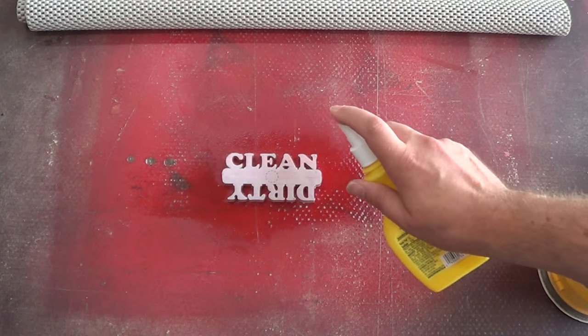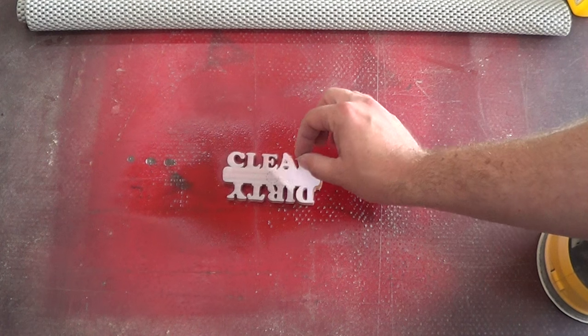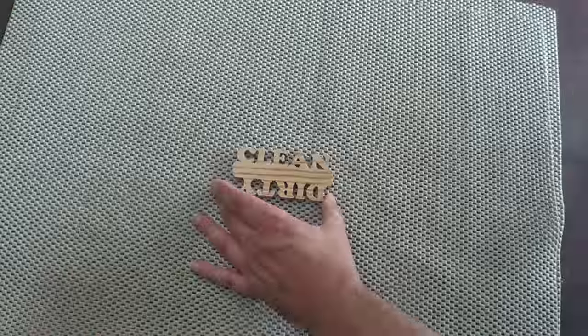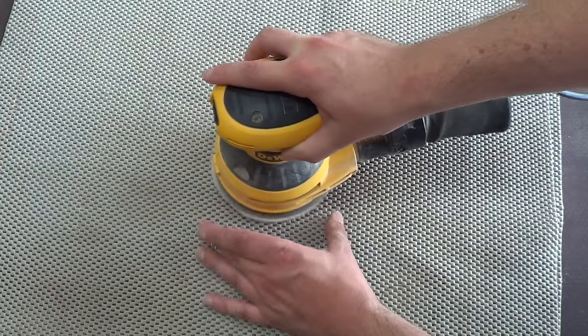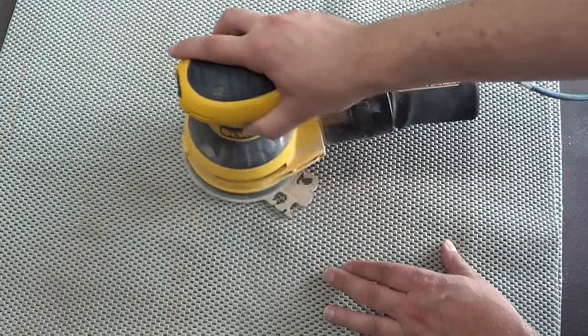With a little bit of mineral spirits I spray down the pattern, and then after a couple of seconds the pattern practically just falls off on its own. Once it's dry I'm able to hit it with the palm sander. And that's mostly to knock off all the fuzzies on the front and the back.